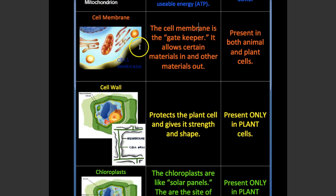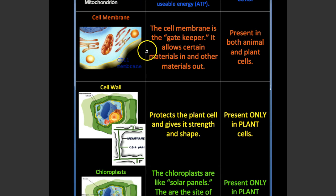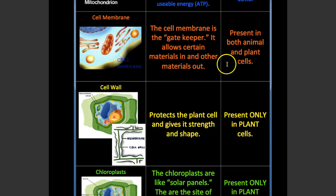The cell membrane is the outside of the cell, present in both plant and animal cells. It's like the gatekeeper or the bouncer, if the cell was a club — it allows certain materials in and other materials out. Again, present in both animal and plant cells.